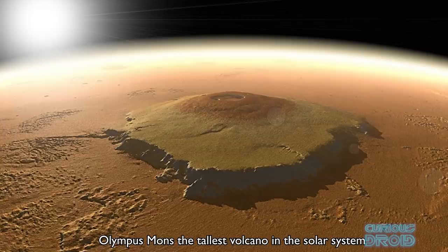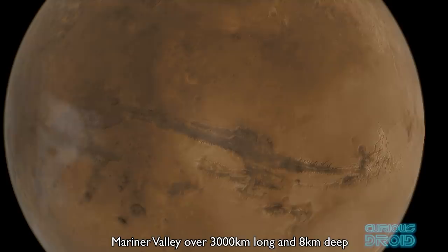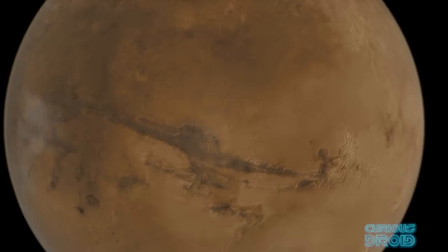On Mars, Olympus Mons, the tallest volcanic mountain in the solar system is 2.5 times the height of Everest and the Mariner Valley is the largest canyon in the solar system that stretches over 3,000 kilometers and over 8 kilometers deep in places. You could lose our Grand Canyon in one of its side channels. And then we reach the human scale, 1 meter.